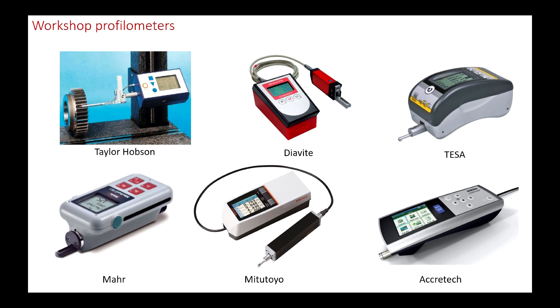Today many brands offer pocket profilometers, called roughness testers. The measuring part is placed directly on the workpiece to be measured. This makes it possible to measure surfaces directly on a large component in production.